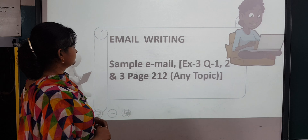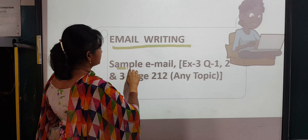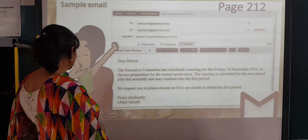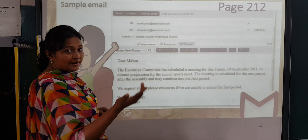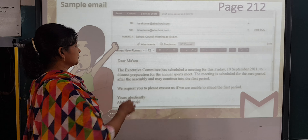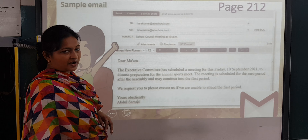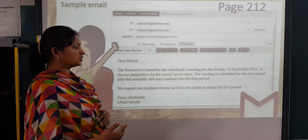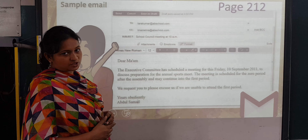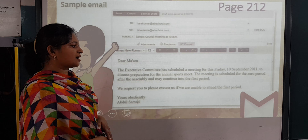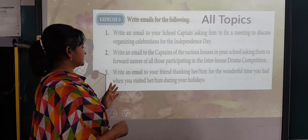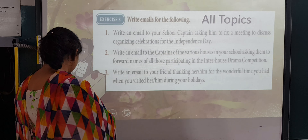Now let's look at a sample email. To: the person's address. CC: ignore it. Subject: School Council Meeting at 10 a.m. Dear Ma'am, the executive committee has scheduled a meeting for this Friday, 10 September 2011, to discuss preparation for the annual sports meet. The meeting is scheduled for the zero period after assembly and may continue into the first period. We request you to please excuse us if we are unable to attend the first period. Yours obediently, [your name].